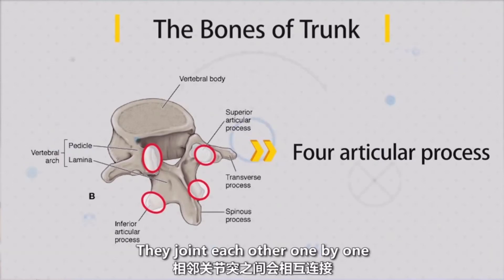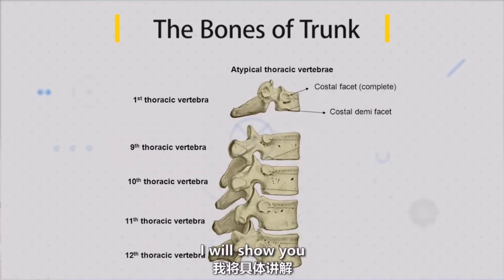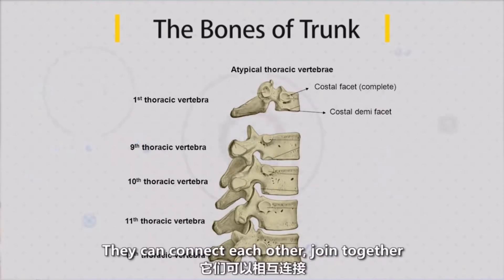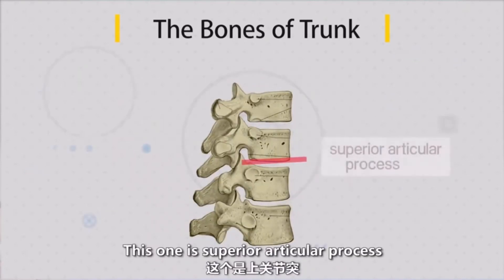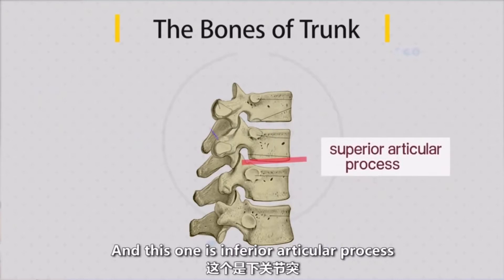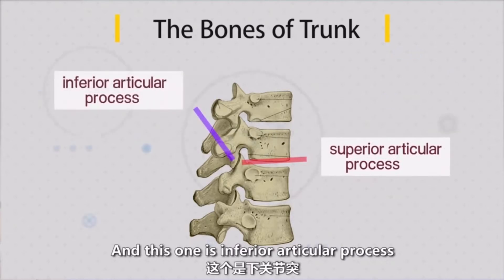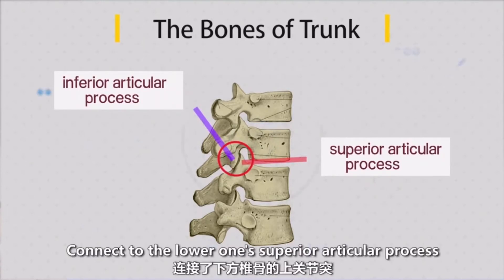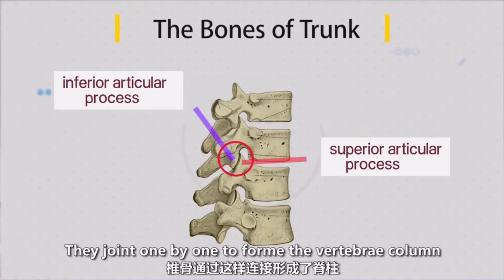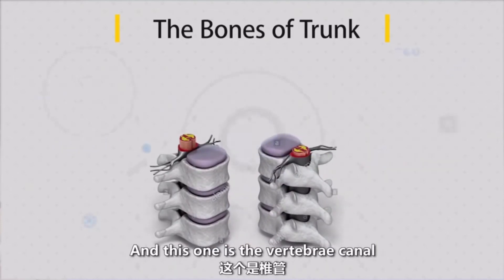Each vertebra connects to the next one. If I find two vertebrae connected and joined together, we will find — be careful — this one is the superior articular process, and this one is the inferior articular process. So the upper one's inferior articular process connects to the lower one's superior articular process. So they form the vertebral column one by one. And this is the vertebral canal.